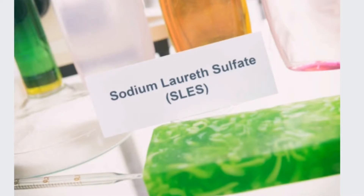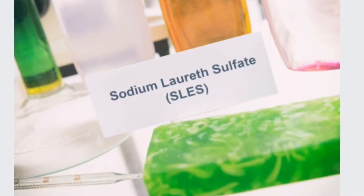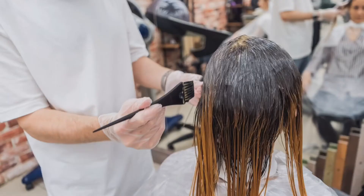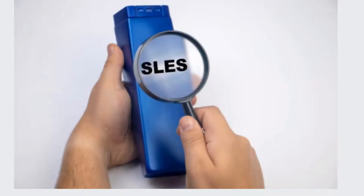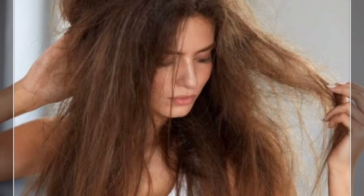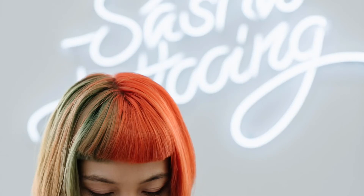For chemically treated, colored, or dyed hair, hair specialists recommend using SLS-free shampoo. Using SLS-containing shampoos on chemically treated hair can cause increased frizziness, dryness, and split ends.